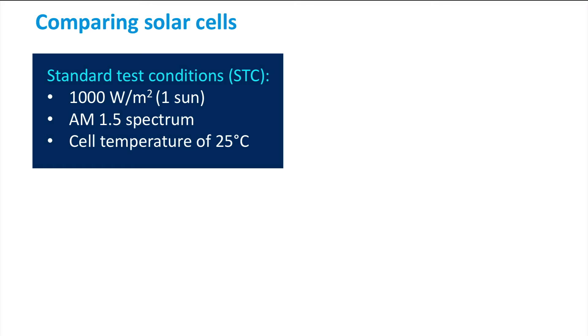In order to compare the performance of different types of solar cells in different locations, the cell temperature and irradiance have to be controlled. To that end, the standard test conditions are defined. These conditions are characterized by a total irradiance of 1000 watts per square meter, the AM1.5 spectrum and a cell temperature of 25 degrees Celsius.